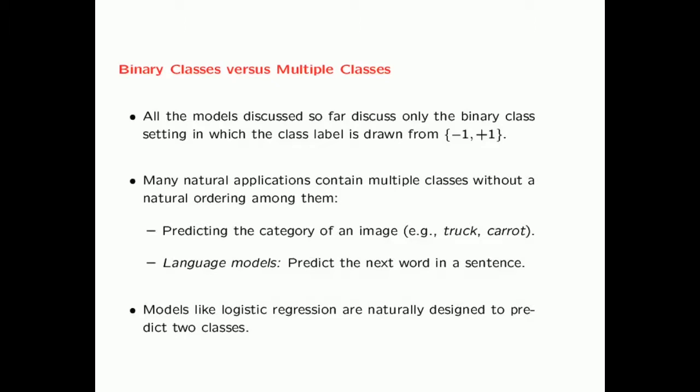Similarly, in language models, you are trying to predict the next word in a sentence. Here you have a very large number of categories and each category corresponds to the identifier of a word. In each of these cases, you can see that you have multiple classes and there is no natural ordering among the different classes. Models like logistic regression are naturally designed to predict two classes, which is a significant simplification because you can always impose an arbitrary ordering between the different classes.